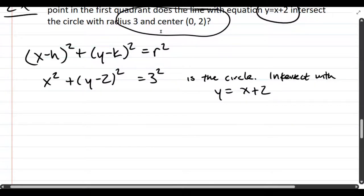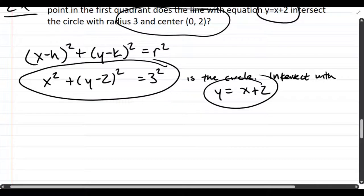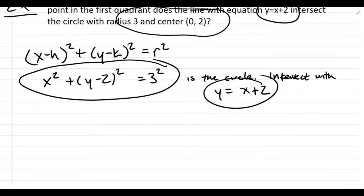We have to intersect these two equations. There are a few ways to do it. Substitution and elimination are the most popular methods. Elimination works great when you have everything to the first power, but we have some squares here, so we're going to substitute.